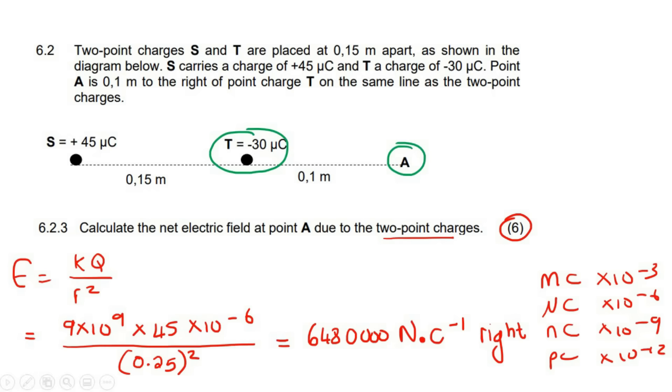So we're going to say nine times 10 to the nine. Now don't use negatives in this formula. Remember, you don't need to do that. So you're going to say 30 times 10 to the negative six and the distance is 0.1 squared. Go ahead.